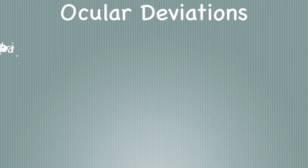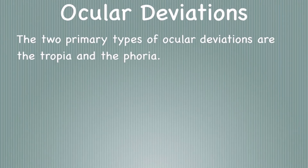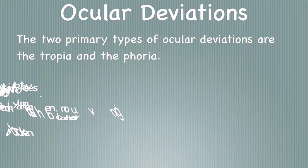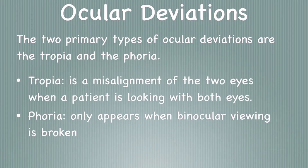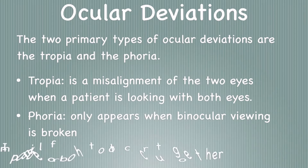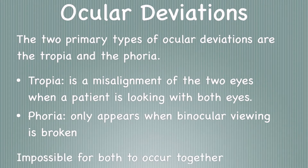The two primary types of ocular deviations are the tropia and the phoria. A tropia is a misalignment of the two eyes when a patient is looking with both eyes uncovered. A phoria only appears when binocular viewing is broken and the two eyes are no longer looking at the same object. These two types of ocular deviations are mutually exclusive, meaning it is impossible for both to occur together.